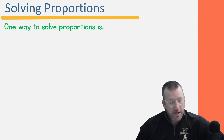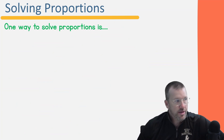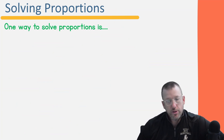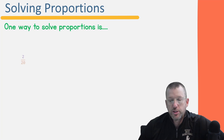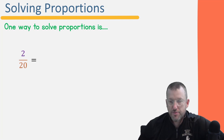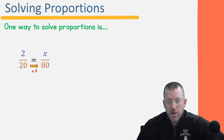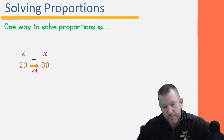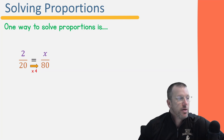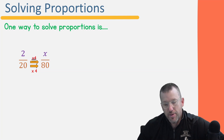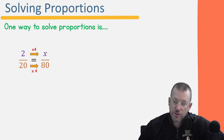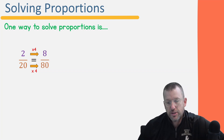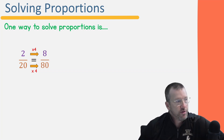In previous videos on unit rate, ratio tables, and proportions, we've focused on thinking about the rate. One way to solve proportions is to ask: what did I do to get from 20 to 80? I multiplied by four, which means the top also multiplies by four. Two times four is eight, so X equals eight.